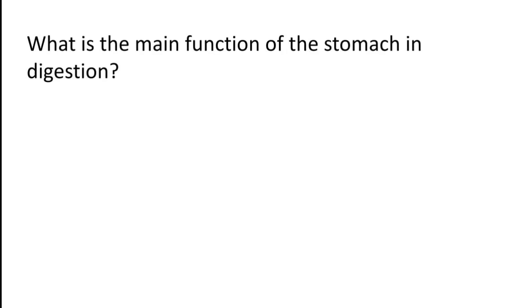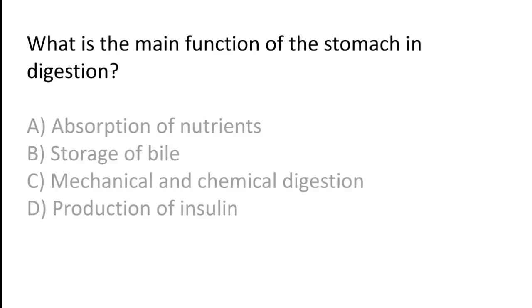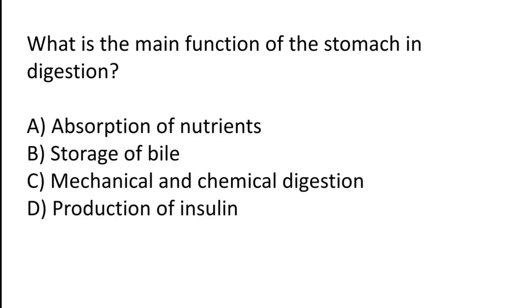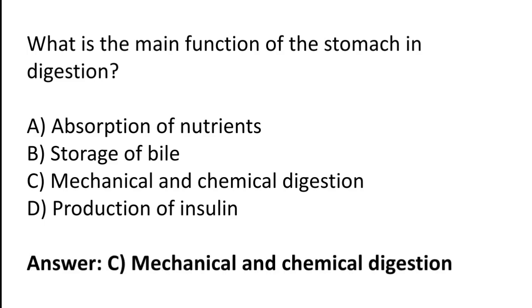What is the main function of the stomach in digestion? Option A: Absorption of nutrients. Option B: Storage of bile. Option C: Mechanical and chemical digestion. Option D: Production of insulin. The correct answer is Option C — the main function of the stomach in digestion is mechanical and chemical digestion.